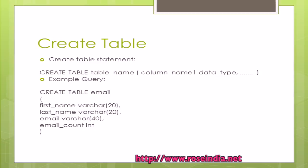The email address field called email is also VARCHAR type with a maximum length of 40, so we cannot store more than 40 characters in the email field. The email_count field is of type INT, that is integer, so it will store only integer values like 0, 1, 2, 3, 4, 100, 1000, etc. In the CREATE TABLE statement we specify the field name and then the data type.